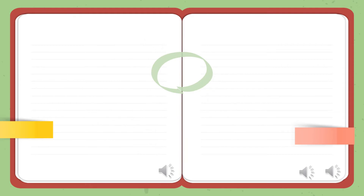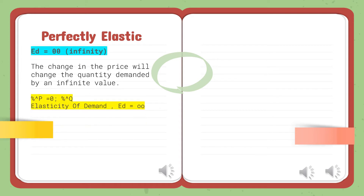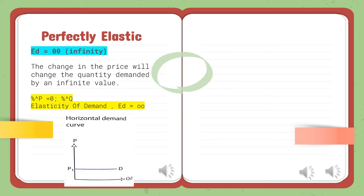The last degree is Perfectly Elastic. A change in price will change the quantity demanded by an infinite value. The demand curve is perfectly horizontal, and the value of elasticity is infinity.